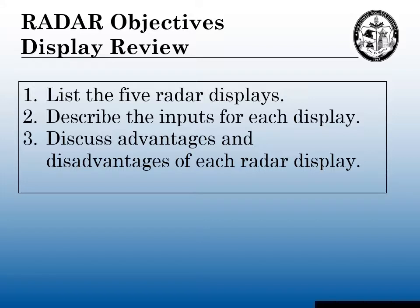To review the objectives: the five radar displays are the unstabilized head-up relative motion radar, the stabilized north-up relative motion radar, the stabilized course-up relative motion radar, the stabilized north-up true motion radar, and the stabilized course-up true motion radar. The only one without an input is the unstabilized; the rest have a gyro and possibly a speed log. We also discussed the advantages and disadvantages of each radar display.